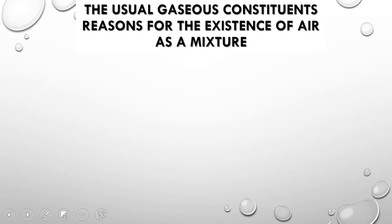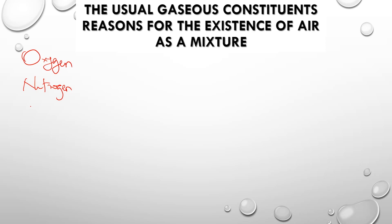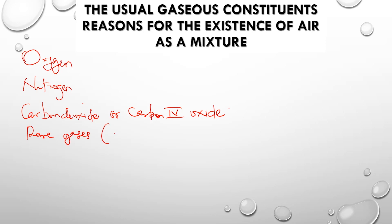Now, what are the constituents of air? Air is made up of oxygen. Air is also made up of nitrogen. Air is also made up of carbon dioxide. Air is also made up of rare gases — and what was given in your syllabus was argon and neon. Air is also made up of water vapor.